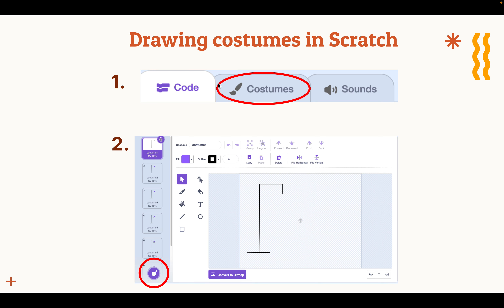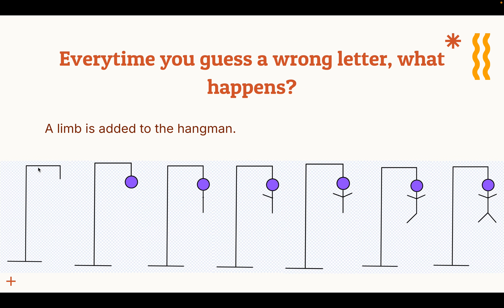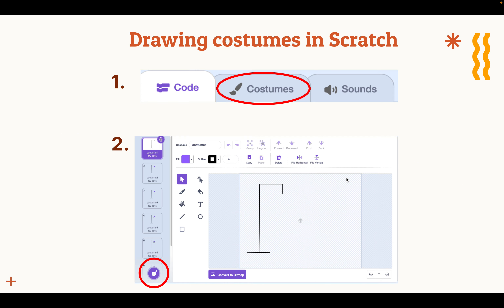So we want to draw these costumes in Scratch. We want to draw each of these different Hangmans in our own Scratch project under the same sprite. We want to have the Hangman where there's no body, the Hangman where we start drawing the head, the Hangman where we draw the body as well, the Hangman where we draw the left hand. So we want to have each of these in our project, and we're going to achieve this by drawing costumes.